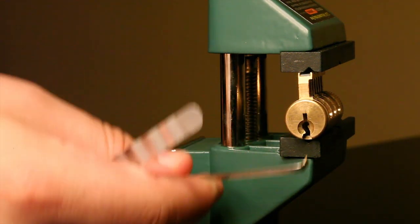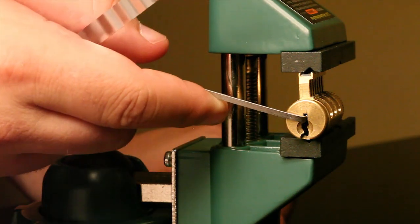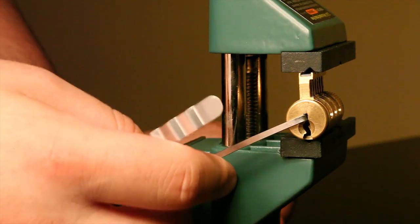Now, this little tension wrench has a couple of serrations cut into it. That's so that it'll hold nice and tight in the keyway. You can apply in both directions.